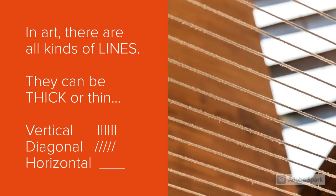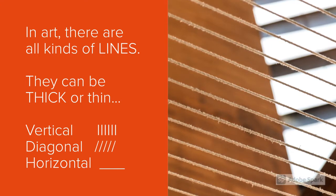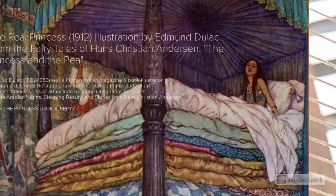In art, there are all kinds of lines. They can be thick or thin. Vertical lines are straight up and down. Diagonal lines slant in any direction. Horizontal lines are straight from left to right.